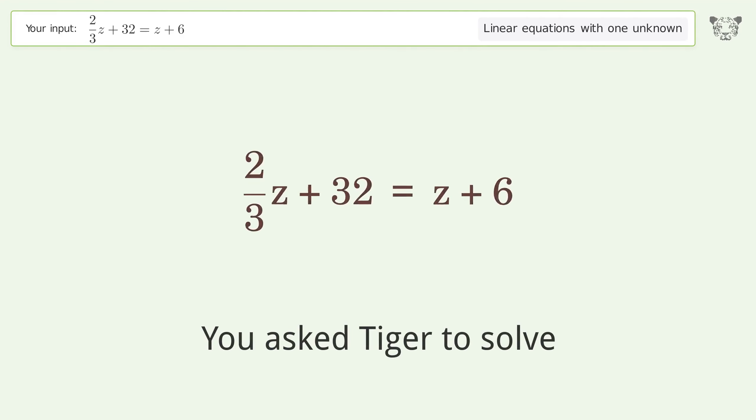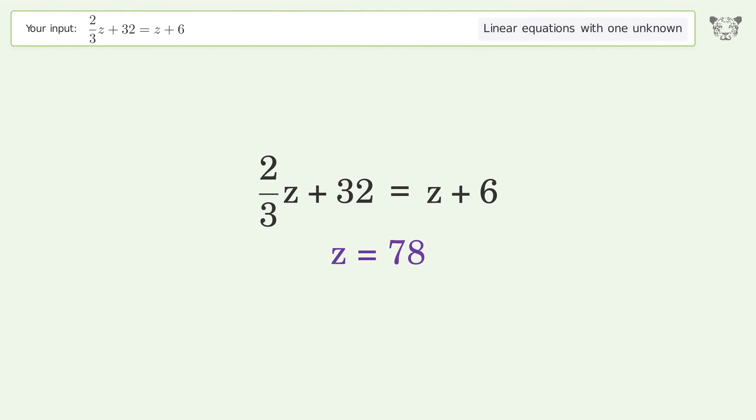You asked Tiger to solve this. This deals with linear equations with one unknown. The final result is z equals 78.